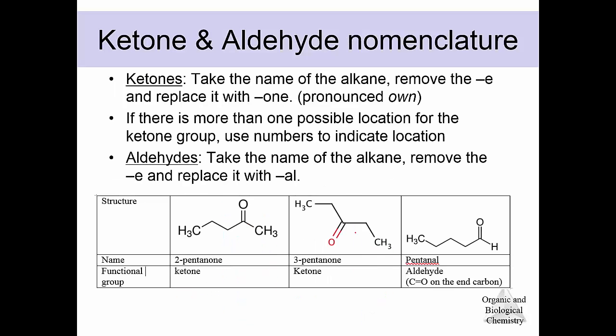As far as naming them, if it's a ketone you change the ending to -ONE; if it's an aldehyde you change the ending to -AL. So pentanone or pentanal if it's an aldehyde. With ketones, if there are different isomers possible and that carbonyl group can show up in more than one place, we need to use a number to specify where that C=O is in the molecule — whether it's on the second carbon, the third carbon, et cetera.